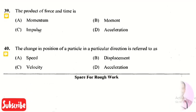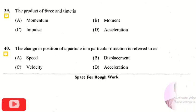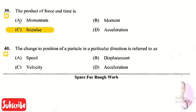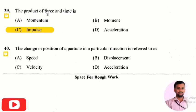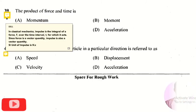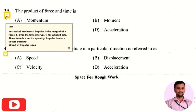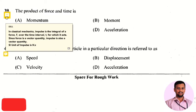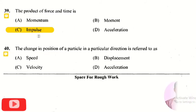The next question is: the product of force and time is — the right answer is option 3, that is impulse. Impulse is the integral of a force over a time interval during which it acts. Force is a vector quantity, so impulse is also a vector quantity, and the SI unit of impulse is Newton-second.